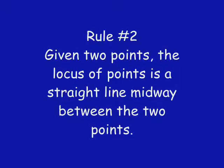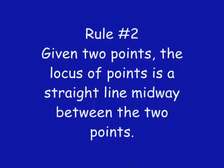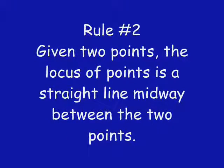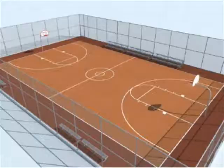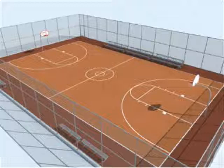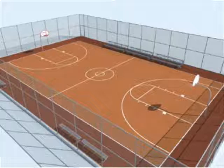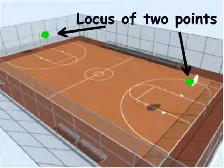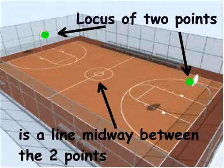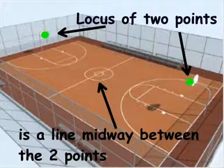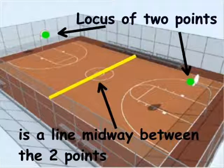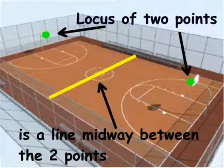Rule number two: given two points, the locus of points is a straight line midway between the two points. We can see rule number two by observing a basketball court. Let the basketball rims represent two points. By the definition of rule number two, the locus of points is a straight line midway between the rims — the center court line.